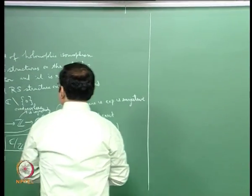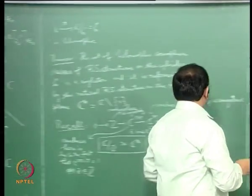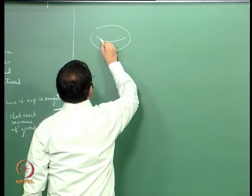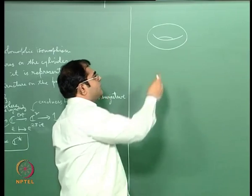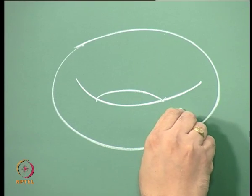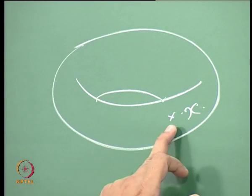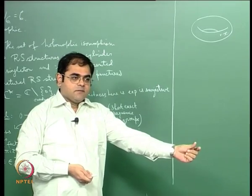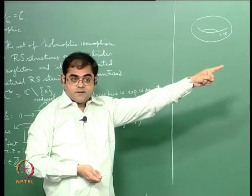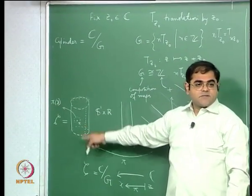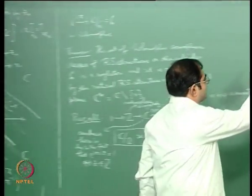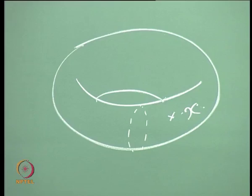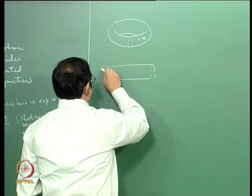Let us go on to look at the case of a torus. I start with the torus and want to get a coordinate neighborhood around a point x that looks like an open subset of the complex plane. The idea is very similar to what we did for the cylinder. You take the torus, cut it vertically, and what you get is essentially a cylinder — with one boundary circle at each end.